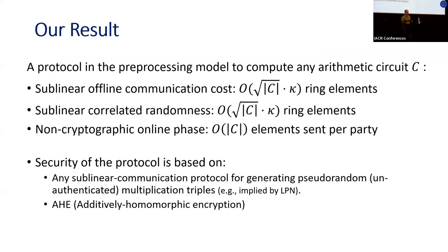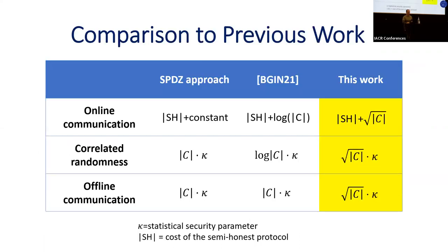Our result is a protocol in the pre-processing model to compute any arithmetic circuit with sublinear offline communication cost, sublinear correlated randomness, and an online phase which is non-cryptographic. The security relies on any sublinear communication protocol for generating unauthenticated multiplication triples, and for the verification part, only additive homomorphic encryption schemes are needed.